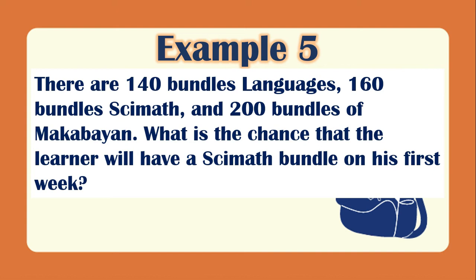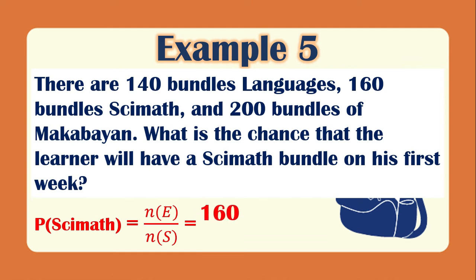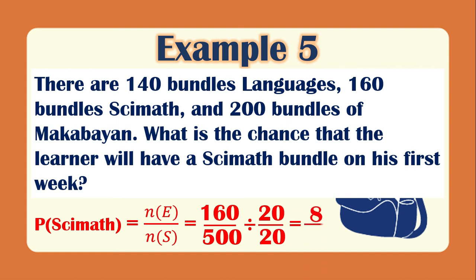What is the chance the learner will receive a CIMAT bundle? The favorable outcome is 160. The total is 140 + 160 + 200 = 500. To simplify 160/500, the GCF of 160 and 500 is 20. So 160/20 = 8 and 500/20 = 25. The chance of getting a CIMAT module is 8/25.